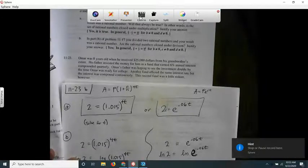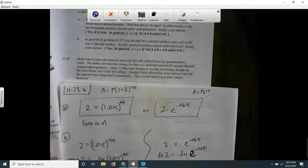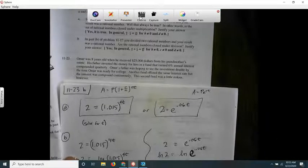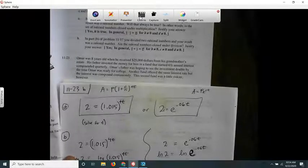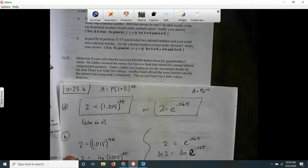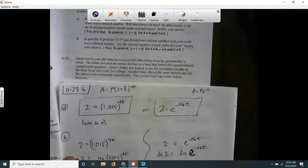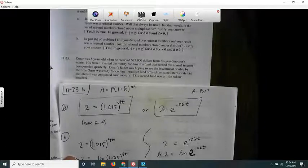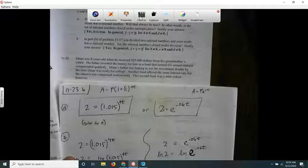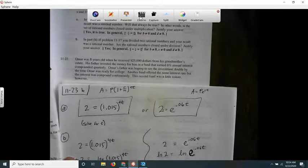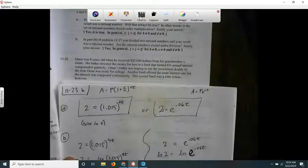Here's Integrated 3, problem 11-23. It says Omar was eight years old when he received $25,000 from his grandmother's estate. His father invested the money in a fund that earned 6% annual interest compounded quarterly, hoping to see the investment double by the time Omar was ready for college. Another fund offered the same interest rate but the interest was compounded continuously. The second fund was a little riskier, however.